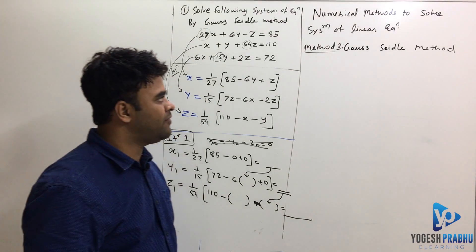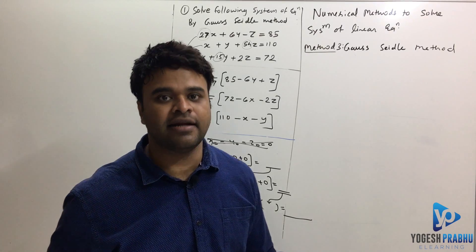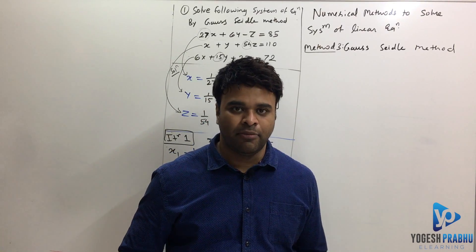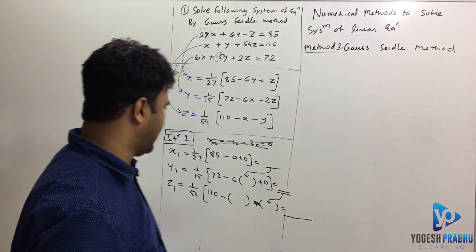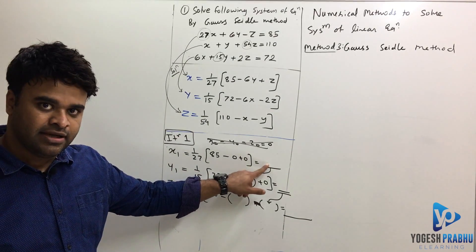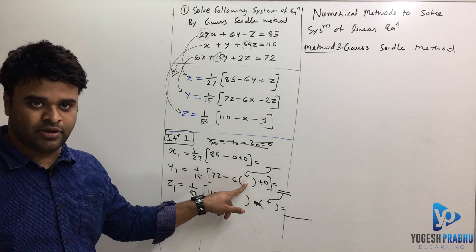So the only rule of Gauss-Seidel method that is different than Jacobi's method is, the moment you get a new value, like over here, I got the value of x1, for next calculation, immediately use that one.